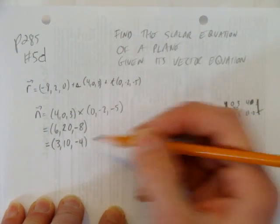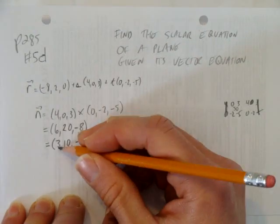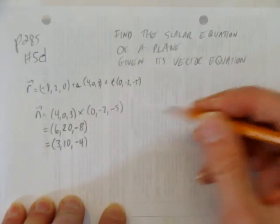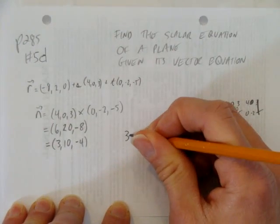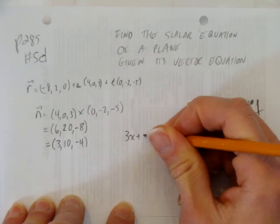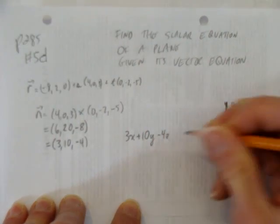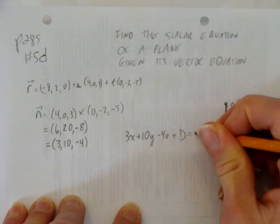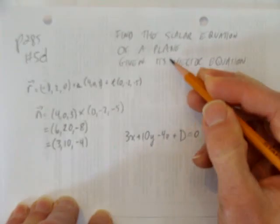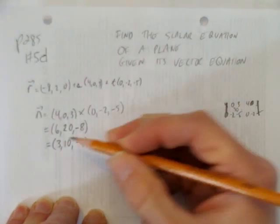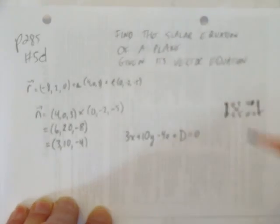Because now that we have this, we can start to write the equation. That is, these components become coefficients. Because we know we can write the scalar equation like this: 3x plus 10y minus 4z plus some unknown constant, d, equals 0. And I got that because I know the scalar equation of a plane is always the coefficients based on the components of the normal vector. That's why I got the normal vector.